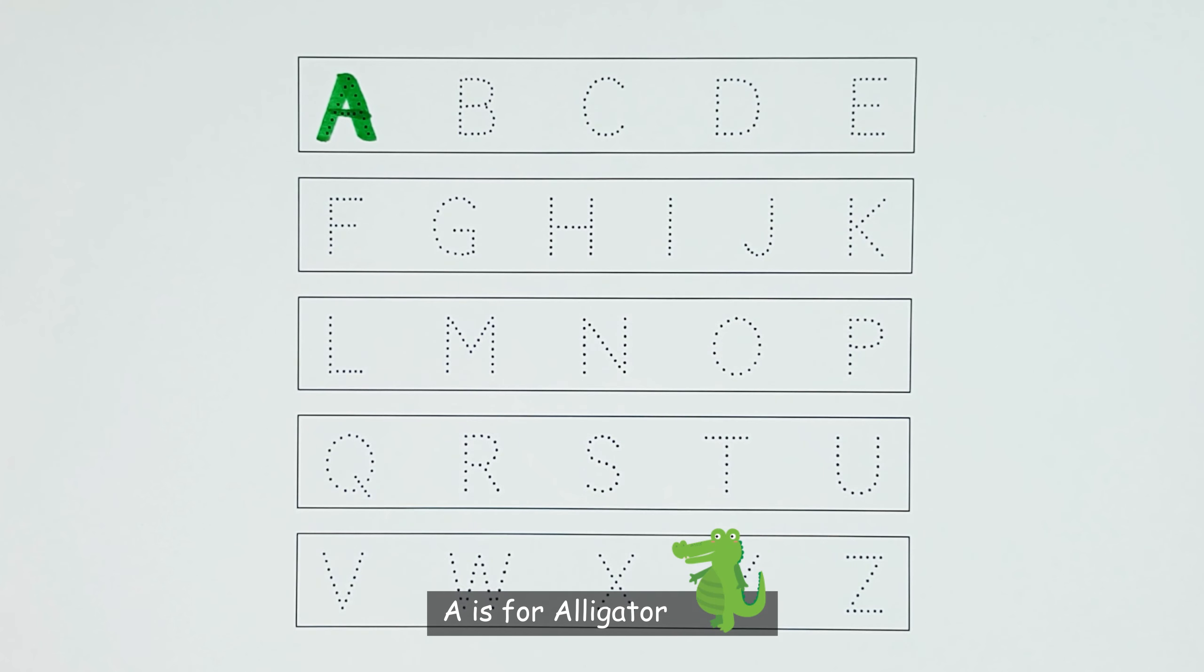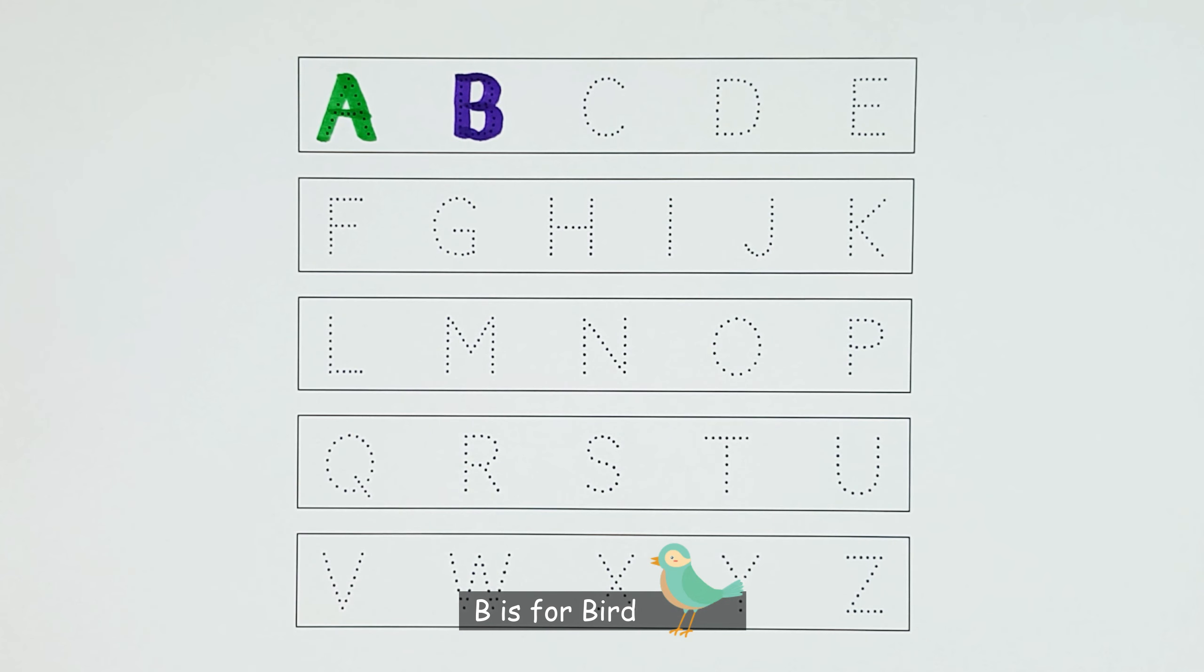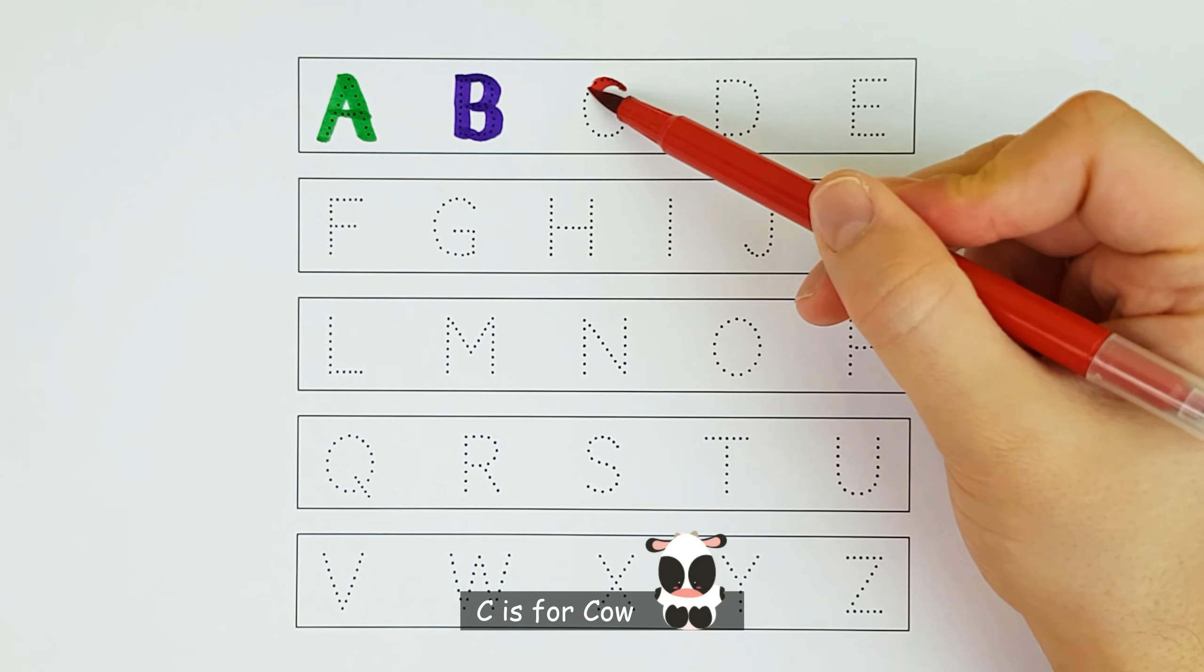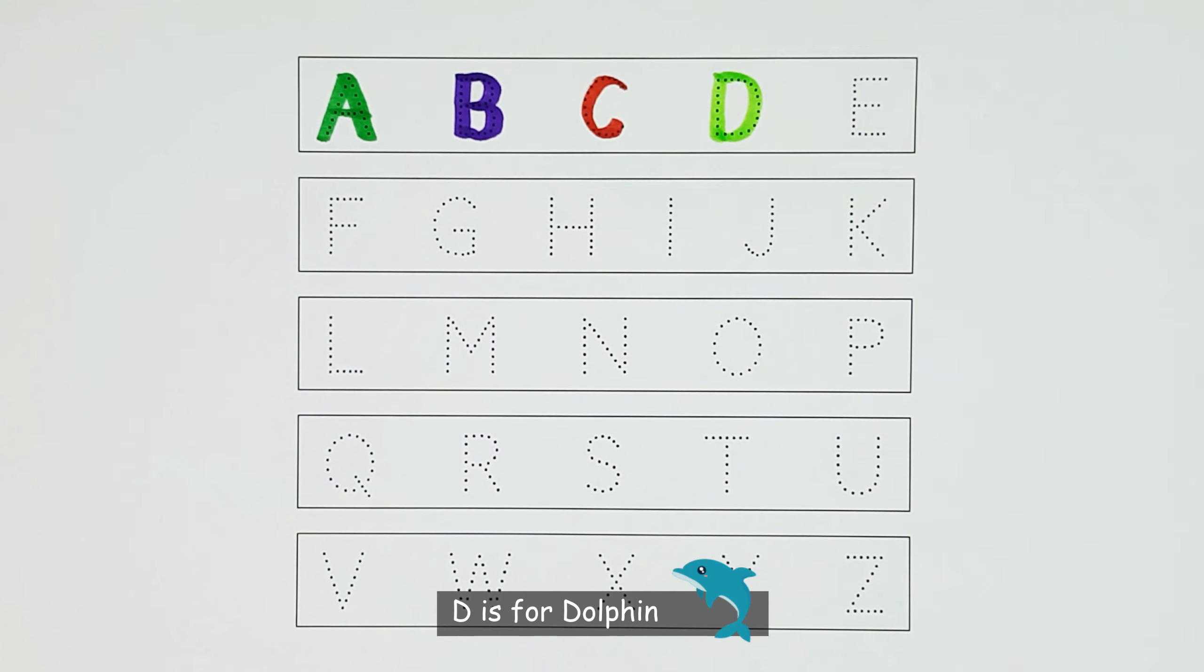A is for alligator. B is for bird. C is for cow. D is for dolphin.